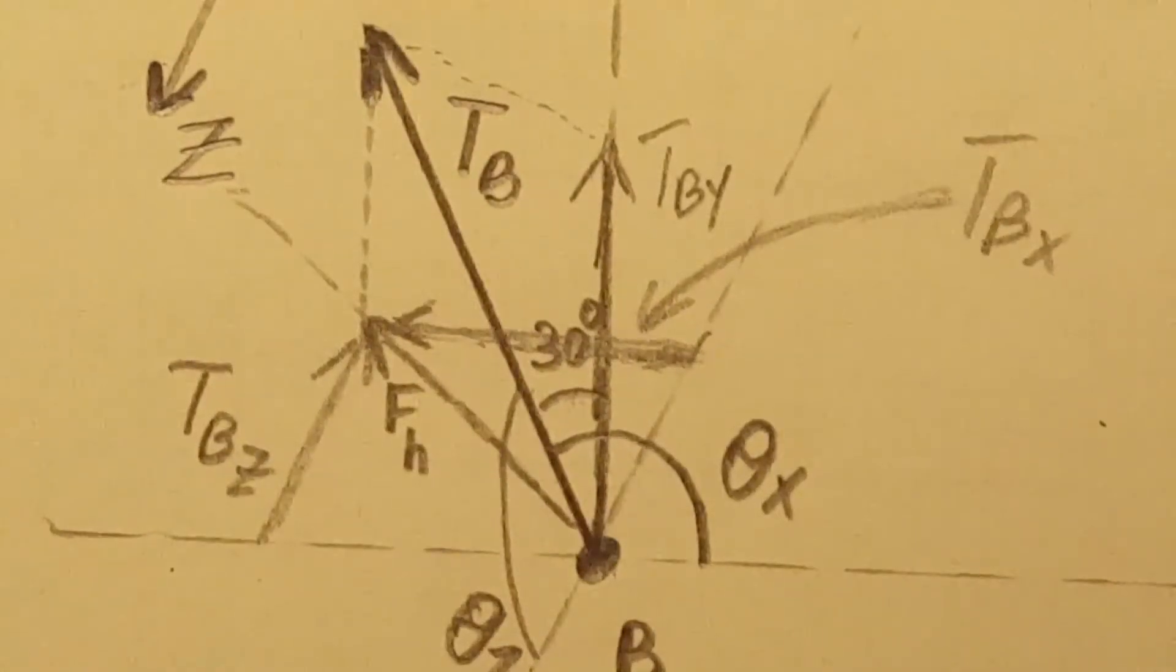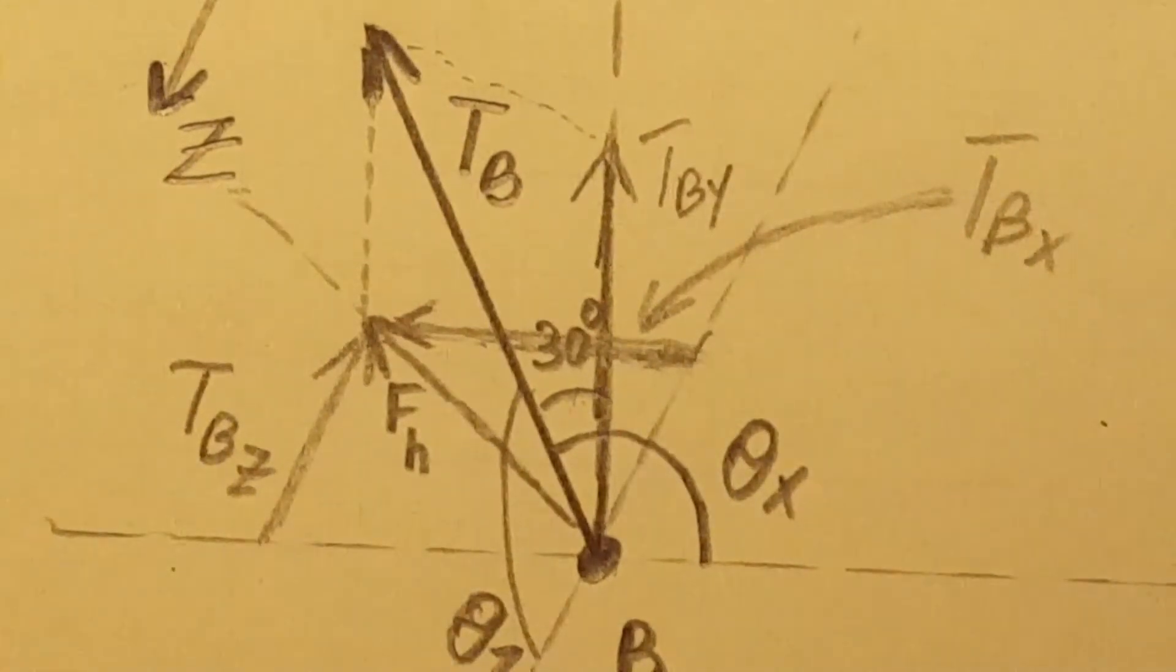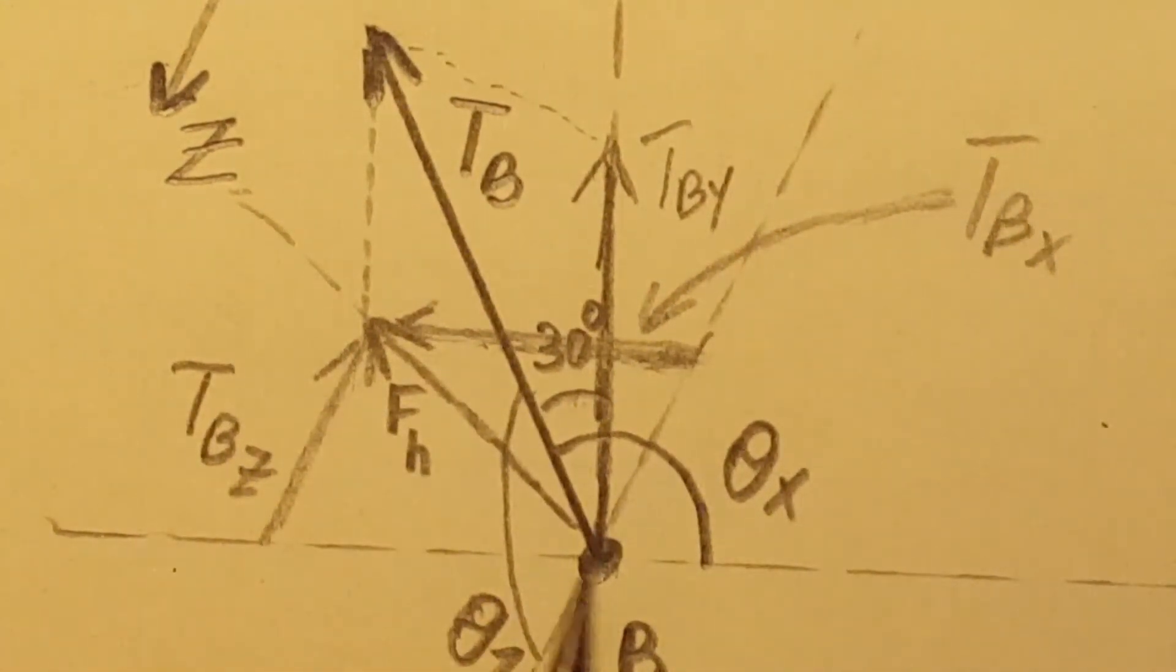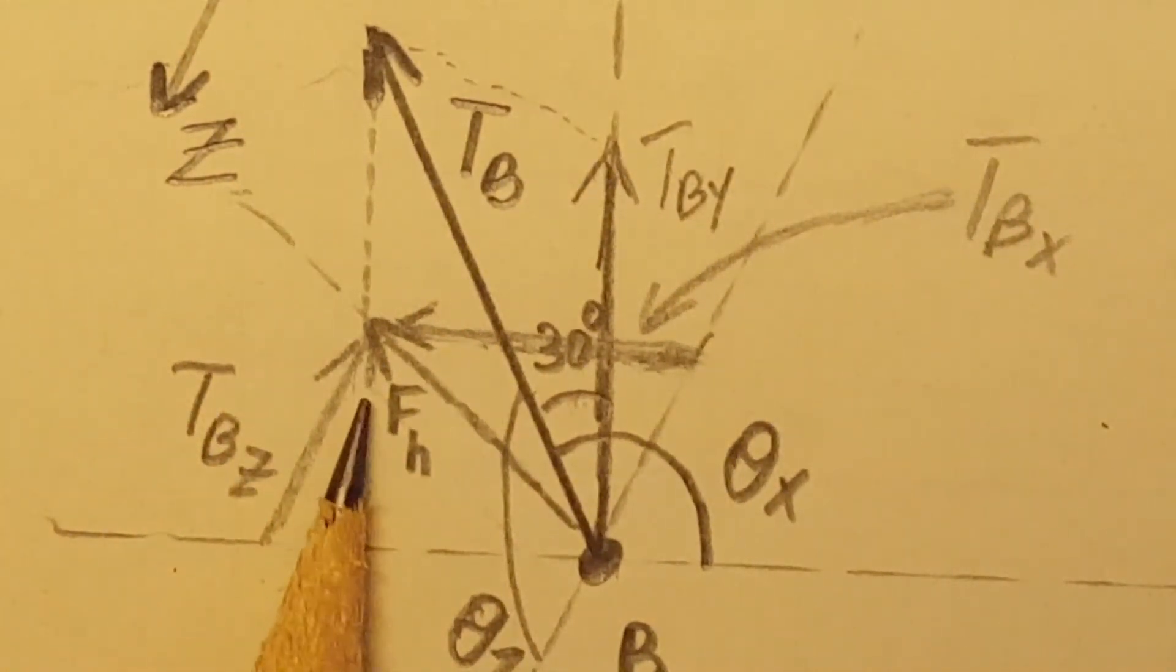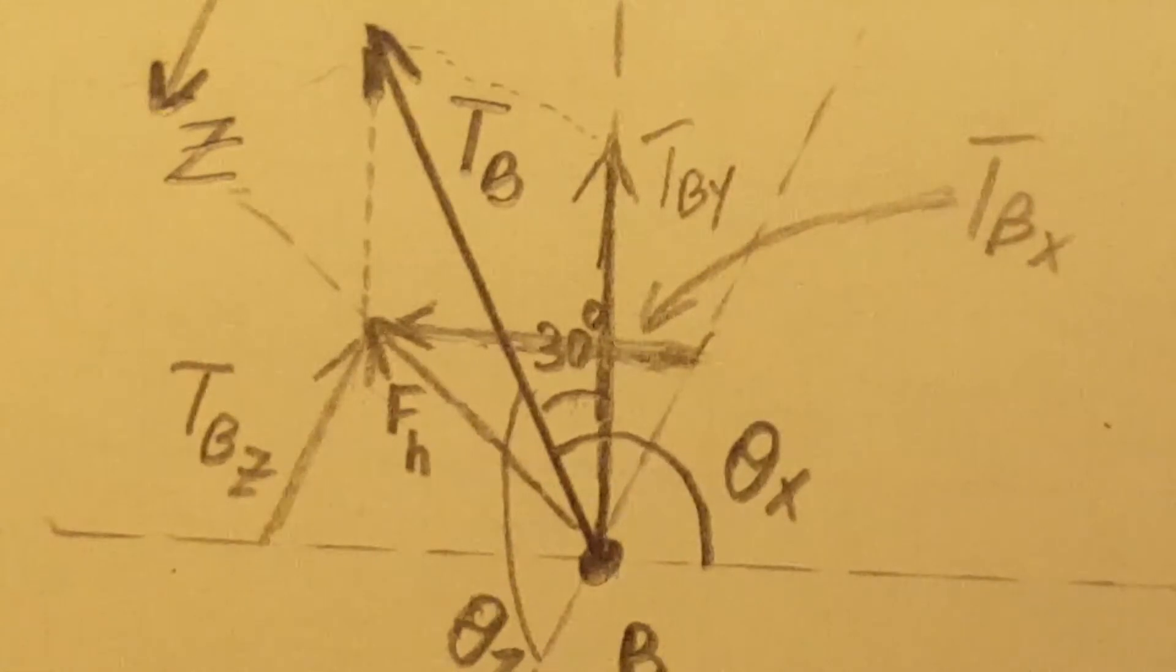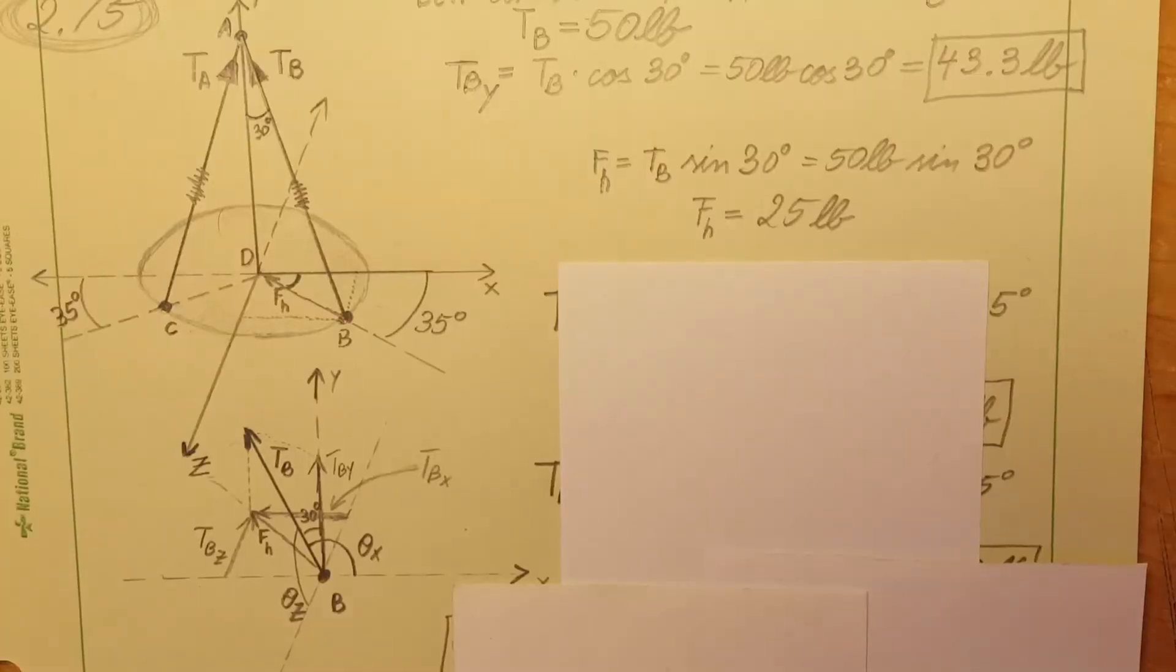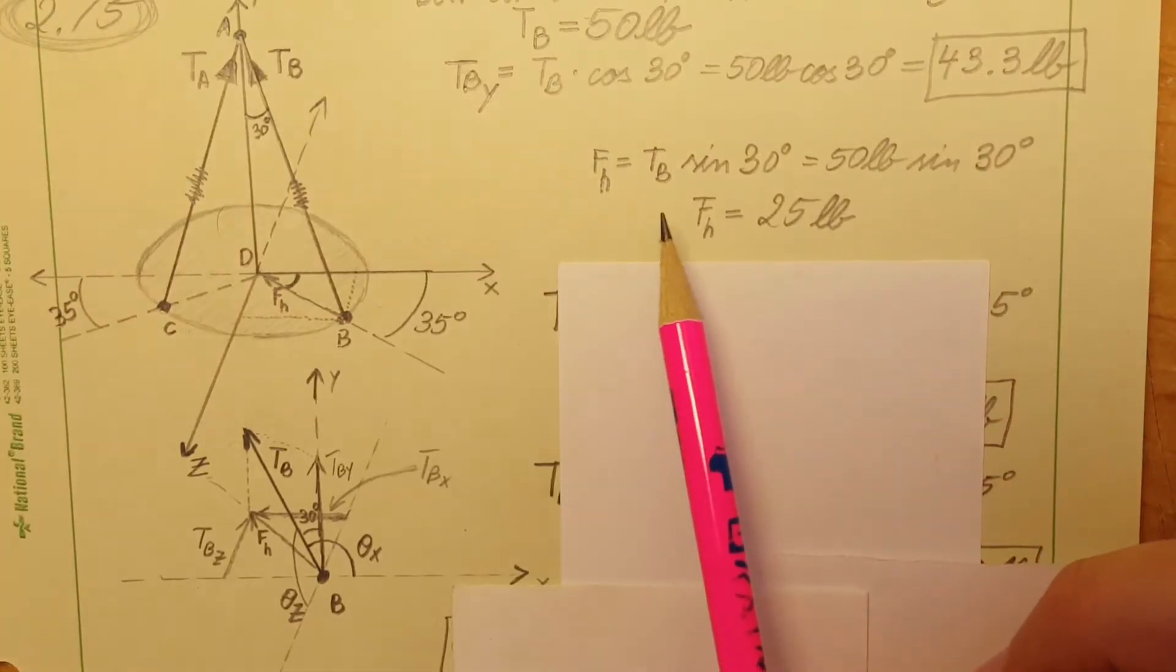Plugging in the values with the calculator we can get 43.3 pounds for our y component. Next we're going to calculate this FH. We're going to take our vector and drop it down into the x and z plane and just call it FH. We are doing this so we can use it to calculate its components.